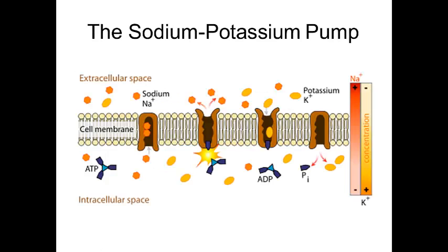An example of active transport is an ion pump. It requires energy, meaning it needs ATP — adenosine triphosphate, the energy currency of the cell. ATP comes along, and one phosphate group breaks off, converting ATP to ADP and releasing energy. That released energy powers the sodium-potassium pump, which we'll discuss more when we study the nervous system.